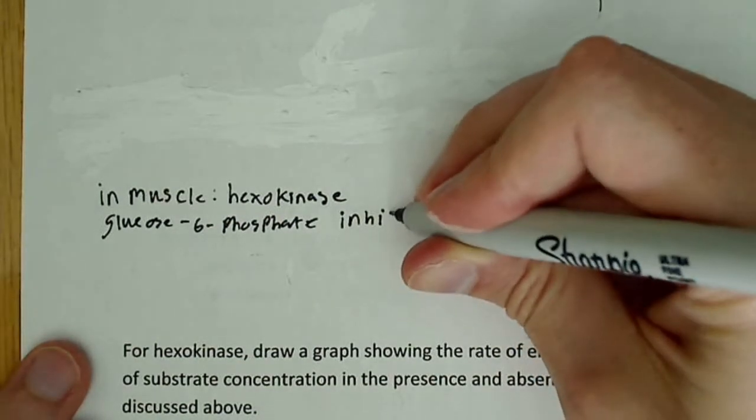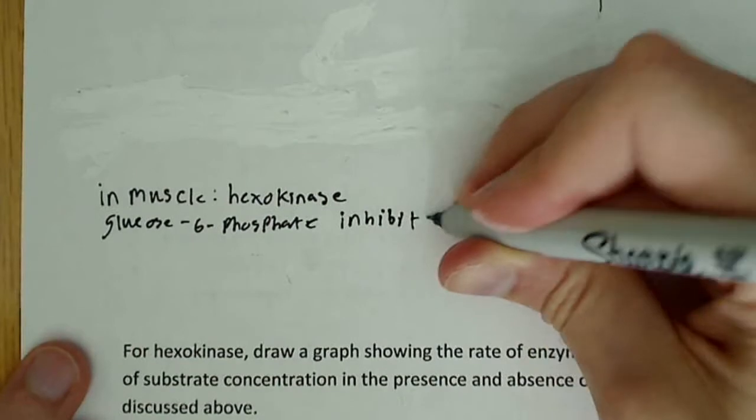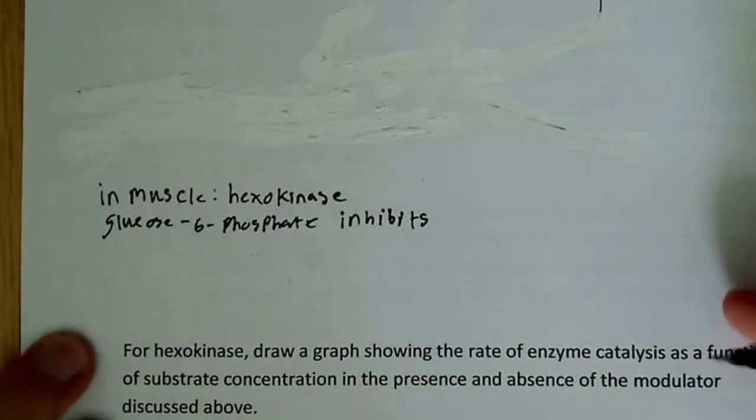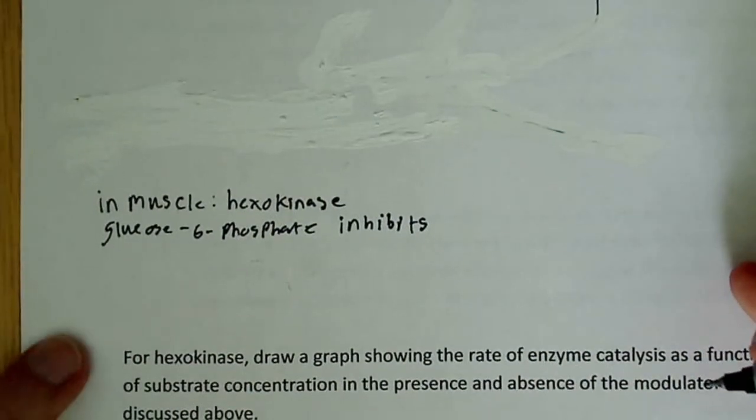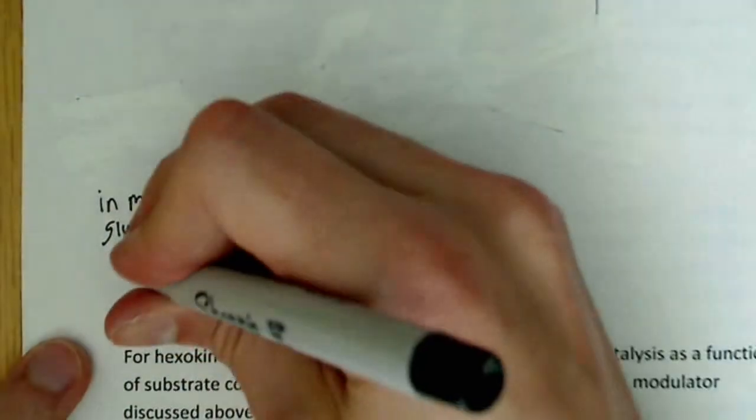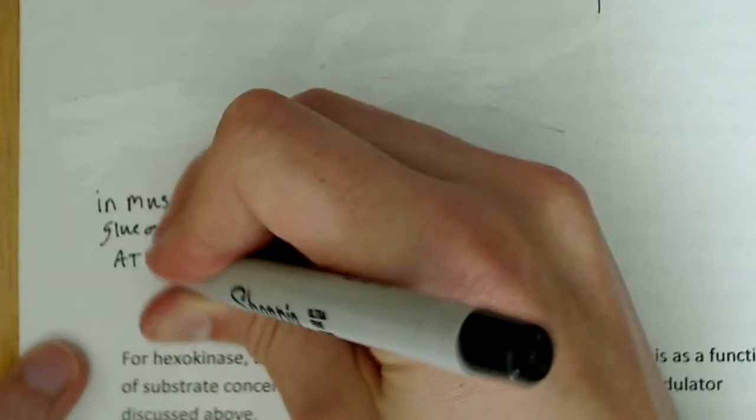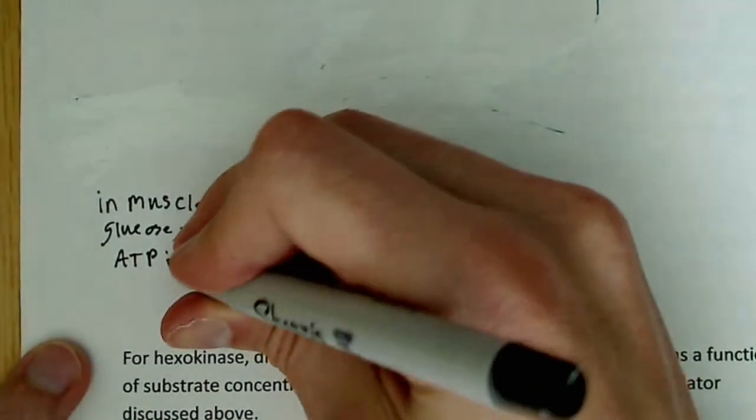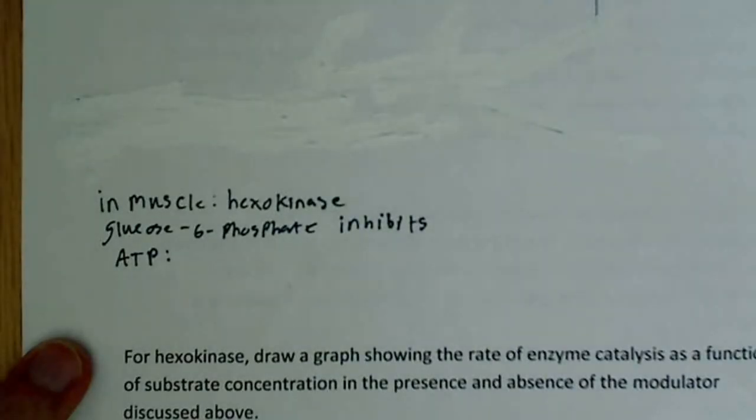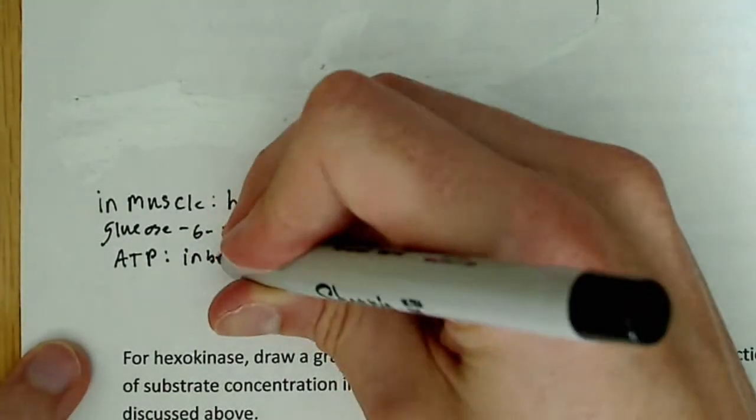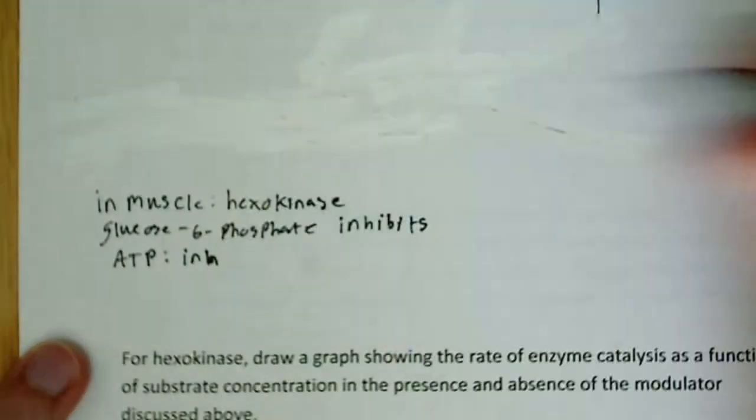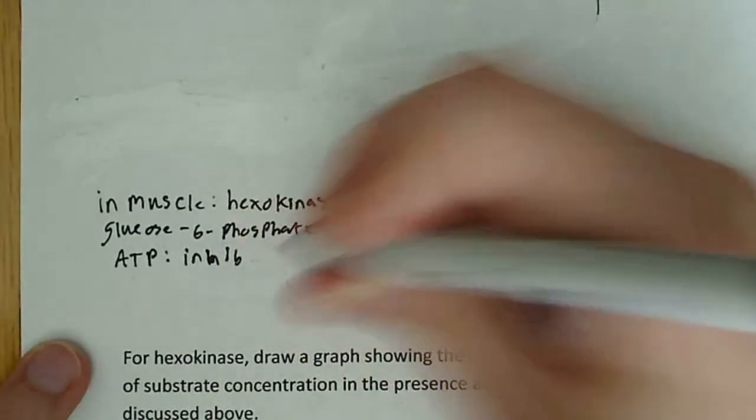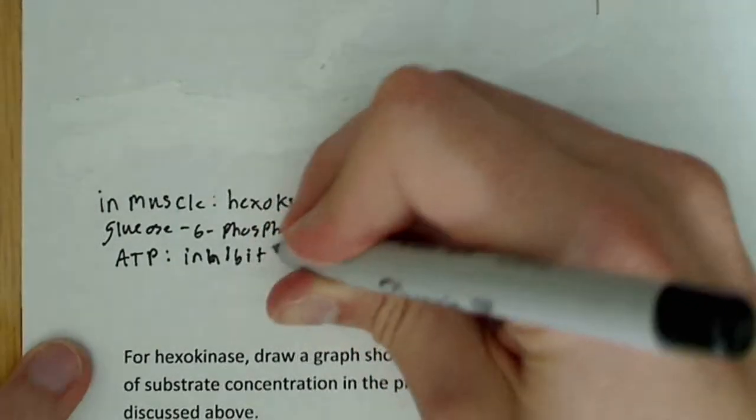Now, ATP also inhibits. Remember, high energy levels, no need to keep making more ATP. So ATP also is an inhibitor, an allosteric inhibitor, so this as well inhibits.